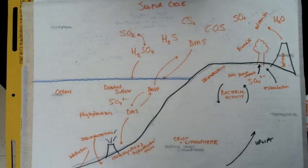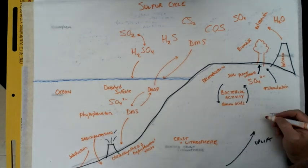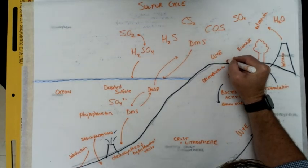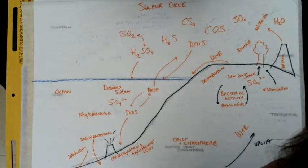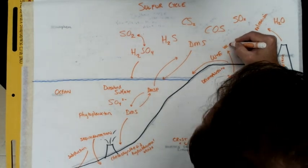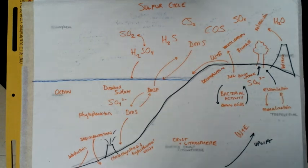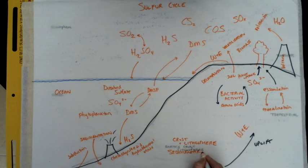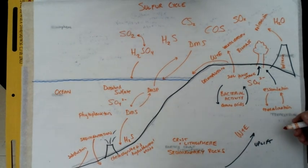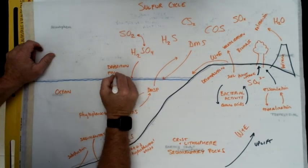They use the influx of sulfur to turn into glucose and sugars, just like on the surface with sunlight and photosynthesis. So this cycle is a fantastic way to visualize the movement, transportation, and translocation of sulfur through different Earth spheres and different chemical reactions.